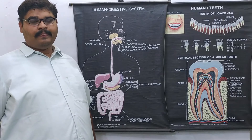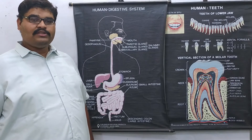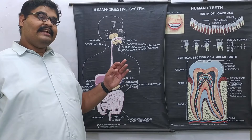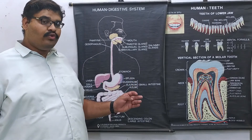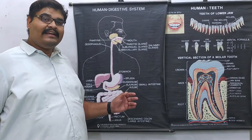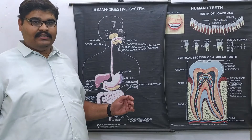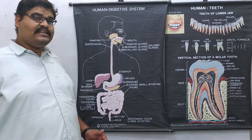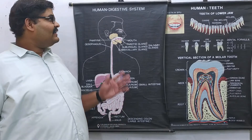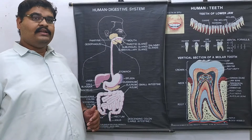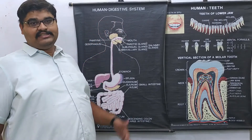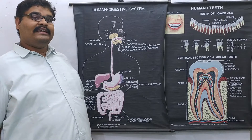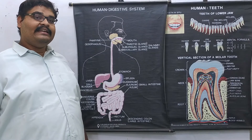Now we move to nutrition in human beings. We humans also have holozoic mode of nutrition — we ingest food, digest it, absorb the nutrients, our cells assimilate them for energy production, and finally we eliminate undigested food material. Under the topic of human nutrition, we are especially focusing on the human digestive system. Before that, let us discuss the definition and types of digestion.